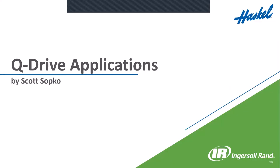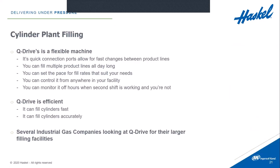We've seen a lot of interest in a wide array of industries interested in the Q-Drive. The first is cylinder plant filling. The Q-Drive is a very flexible machine — it has quick connection ports allowing for fast changes between product lines. You can fill multiple product lines all day long, set the pace for filler rates that suit your need, control from anywhere in your facility, and monitor it off hours when second shift is working. The Q-Drive is very efficient; it can fill cylinders fast and accurately, and we've had several industrial gas companies looking at it for their larger filling facilities.